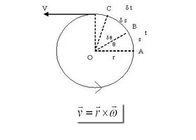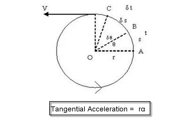Similarly, when the body is not in UCM, its linear velocity changes. Even in UCM, though the magnitude of velocity or speed is not changing, as the direction of linear velocity changes, there is always an acceleration. This acceleration is called tangential acceleration. Tangential acceleration AT is given as the product of r, that is the position vector or radius, and alpha, which is the angular acceleration. Hence, AT is given as r into alpha.